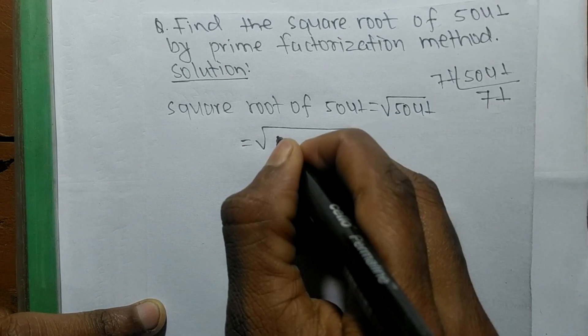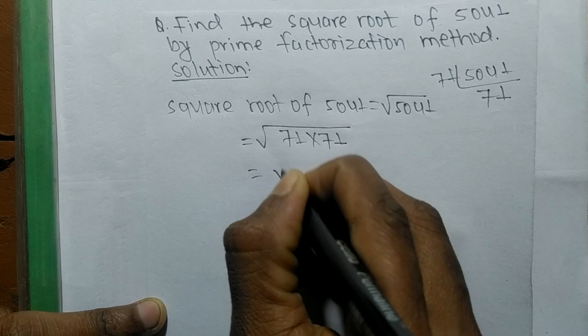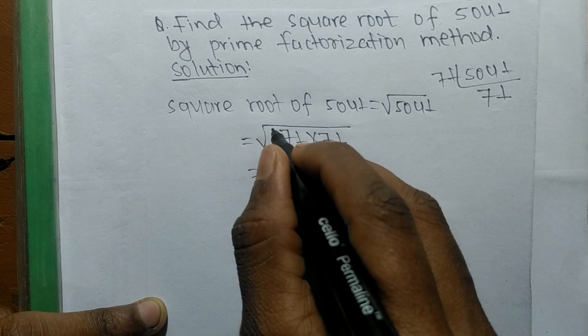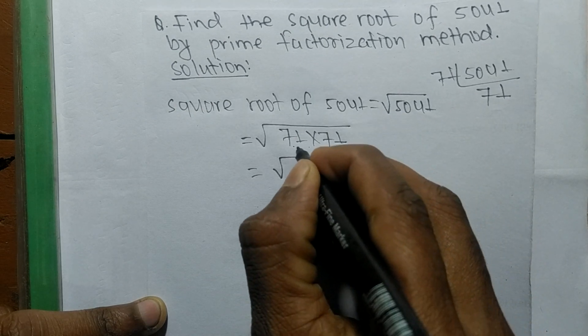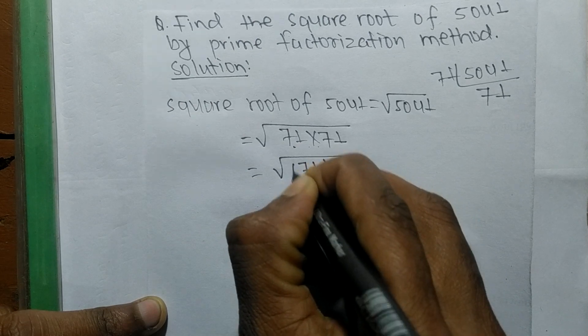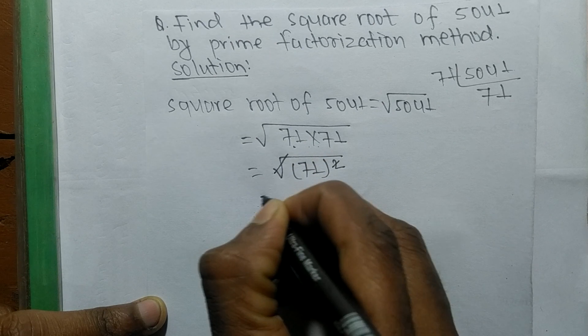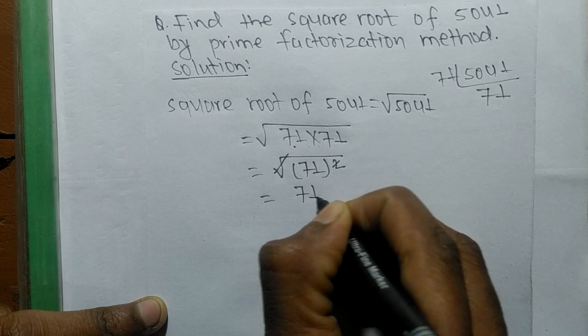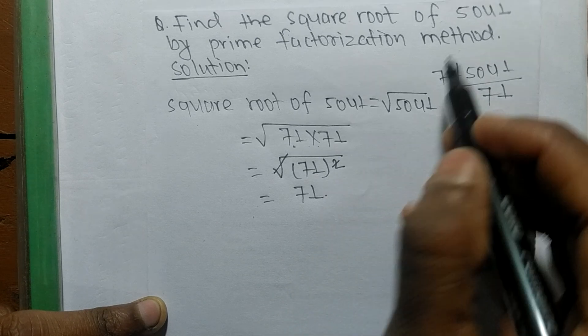we can write 71 times 71 under the square root. Since we're finding a square root, we make this into a square: 71 times 71 equals 71 squared. The square root and the square cancel each other, and 71 comes out of the square root.